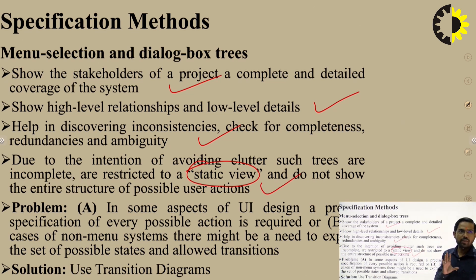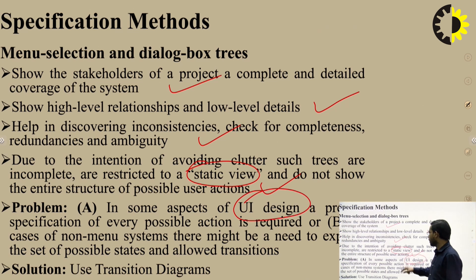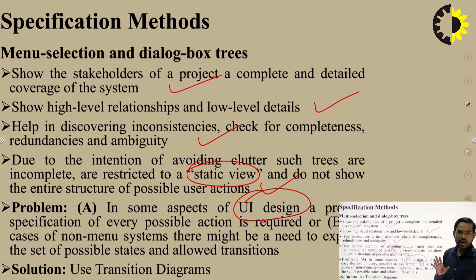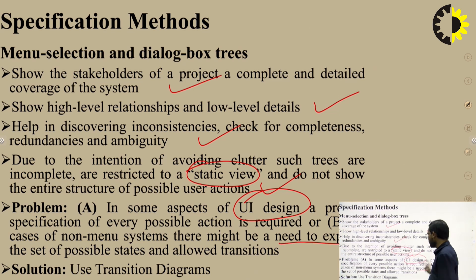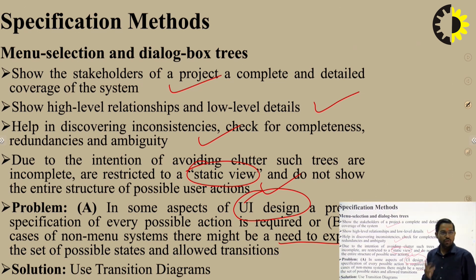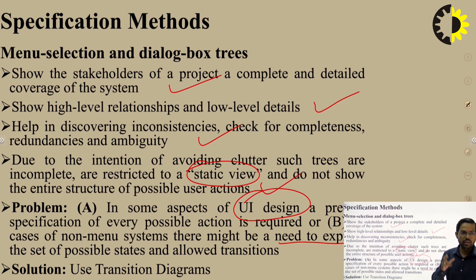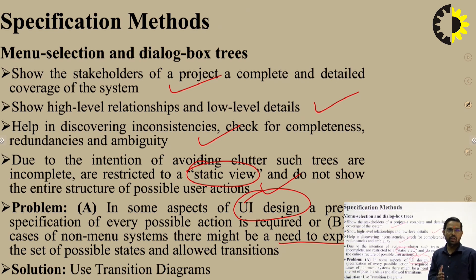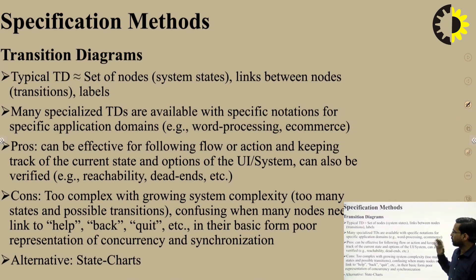Problems with menu selection and dialog box design: in some aspects of UI design, a precise specification for every possible action is required. In non-manual systems, there may be a need to express a set of possible states and allow transitions. The solution is to use transition diagrams — diagrams that transition from one state to another state.